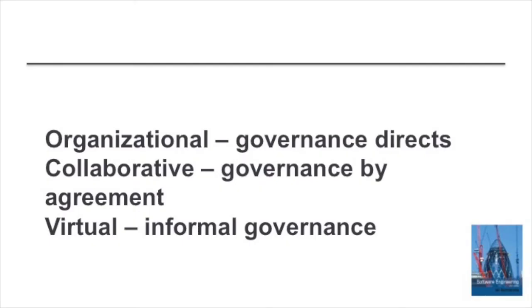In summary, we can think of three types of system of systems: organisational systems, where there is a single governance body that can control the system; federated systems, where governance involves voluntary participation; and coalitions of systems, where there's no central policy-making body.